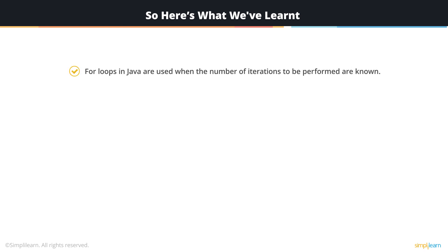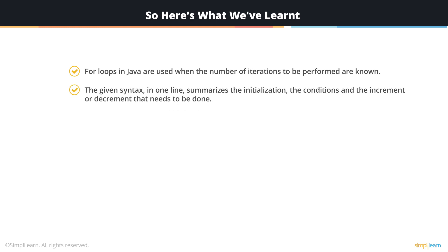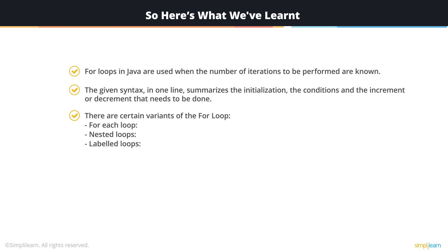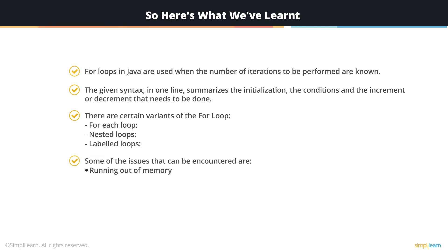Here is a recap of what we have covered. For loops in Java are used when the number of iterations to be performed are known. The syntax in one line summarizes the initialization, conditions, and increment or decrement. Variants of the for loop include: the for-each loop, which allows traversal of an array or collection; nested loops, where one loop exists within another; and label loops, where labeling each nesting loop makes exiting a specific loop easier. Some issues that can be encountered are running out of memory, and due to a condition failing, being caught in an infinite loop.